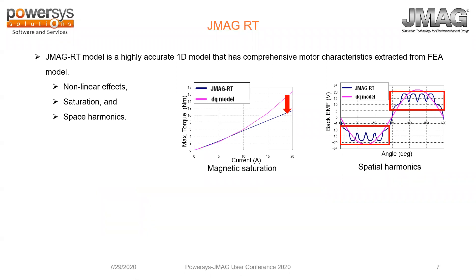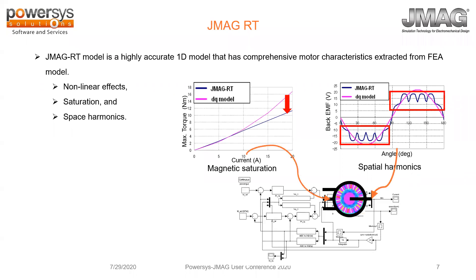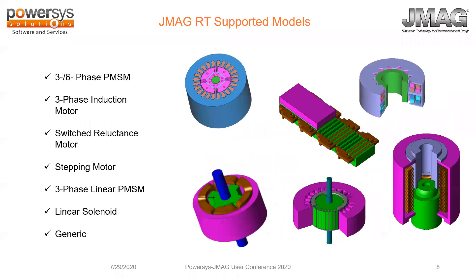JMAG-RT creates a highly accurate 1D model with comprehensive motor characteristics extracted from an FEA model. It captures nonlinear effects, saturation, and space harmonics. The RTD file generated from JMAG-RT can be used in your control modules and system-level simulations. JMAG-RT is widely supported across three- and six-phase PMSM machines, three-phase induction machines, switched reluctance motors, stepping motors, and linear solenoids. Any other model can also be used in the generic mode of operation of JMAG-RT.